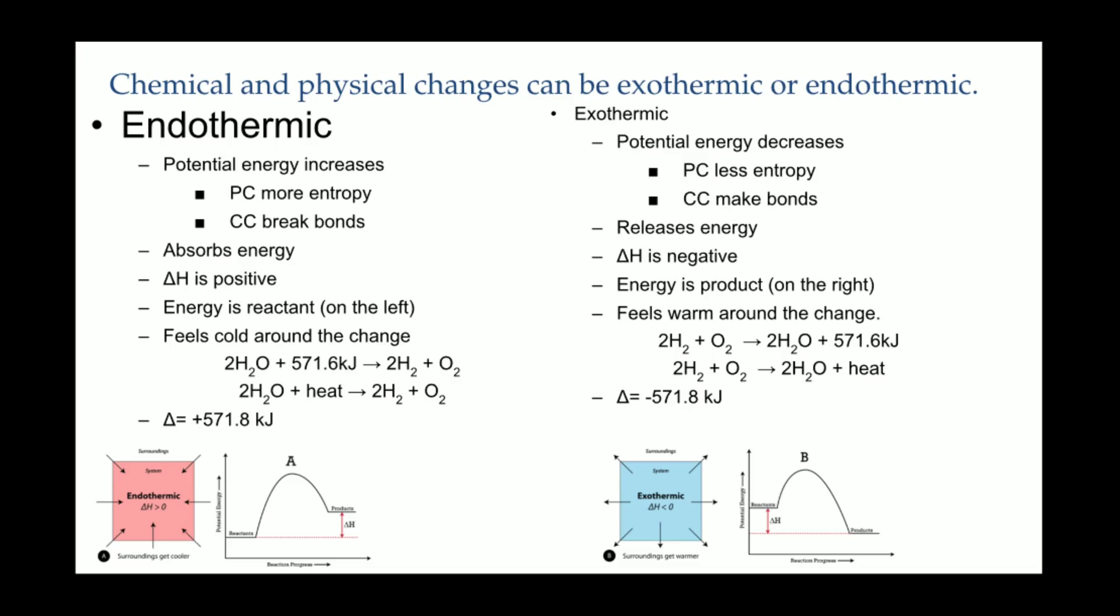The last thing we'll examine today is the difference between endothermic reactions and exothermic reactions. We will visit this concept throughout the entire year. Take a moment to pause the video so you can get these notes down. Endothermic reactions absorb energy. During phase changes, that can be used to spread the particles further apart and increase entropy. During chemical changes, endothermic reactions are used to break bonds. In endothermic reactions, heat appears on the reactant side, and the delta H will always be a positive sign.